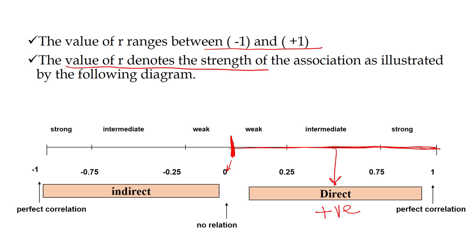In the same way, if you go to the left side, from here to here it is negative correlation. You can also say inverse correlation or indirect correlation.